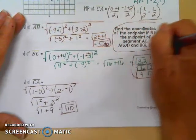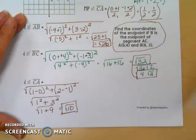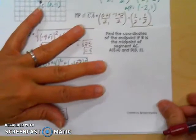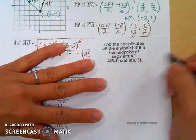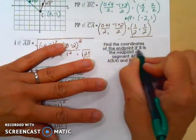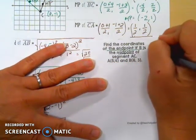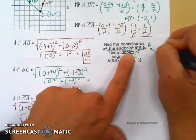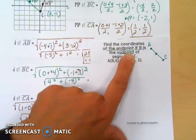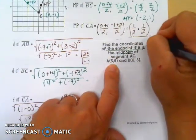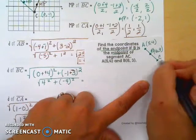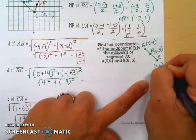Now we have an interesting challenge. I'm not happy that they use the same letters A, B, and C as above because this is a brand new set. We want to find the coordinates of the endpoint if B is the midpoint of segment AC. We've got segment AC, B happens to be the midpoint, and we're told A is at (5, 4) and B is at (6, 3). We need to find the other endpoint — where is C?